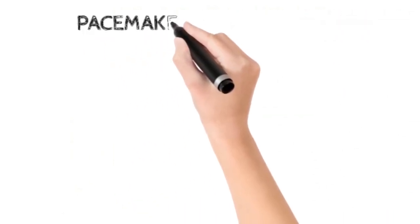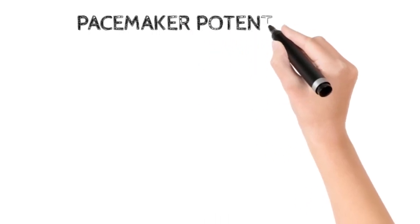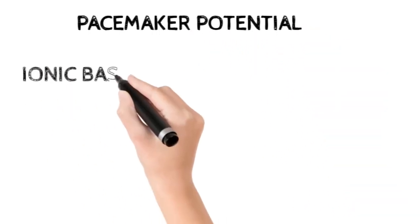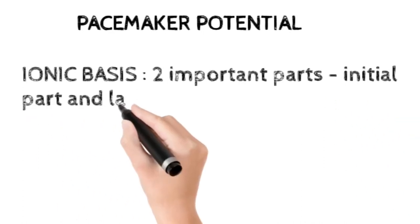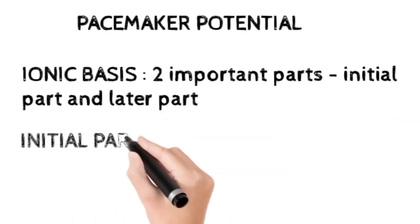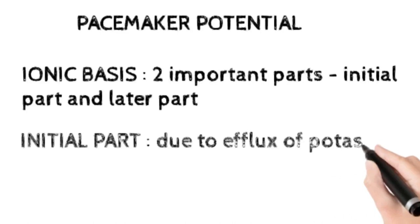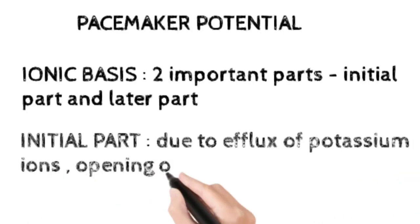Pacemaker potential: The ionic basis of pacemaker potential has two important parts, the initial part and the later part. The initial part is due to the efflux of potassium ions and the opening of F channels.